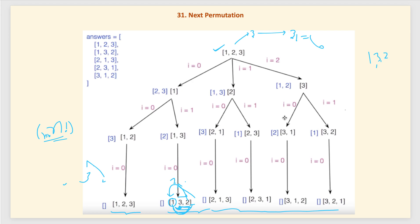After swapping we get 2 3 1, then we reverse the whole right part after the swap index, giving us 2 1 3 — which is the just next permutation. Similarly, for another example where the break occurs at the very first position, we take that number and find the immediate greater element from right to left, swap these two to get 2 3 1, and then reverse the right part. That is the key idea to understand how we need to solve this problem.